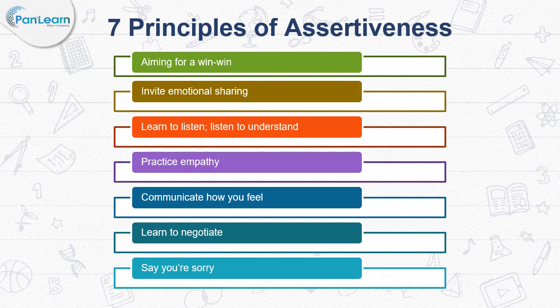Principle 3: Learn to listen. Listen to understand. You can hear what someone says, but if you are not truly listening it goes in one ear and out the other. To be an effective listener, focus on the present, lower your defenses, remember your goal of win-win, look for points of agreement, and repeat what you hear so both parties can be certain the other is correctly interpreting what has been said. Principle 4: Practice empathy. Empathy can go much deeper than just seeing the world from others' perspective — it can mean caring as much about others' well-being as you care about your own. The first step is to recognize that others' needs and boundaries are separate from yours and that they experience life differently than you.